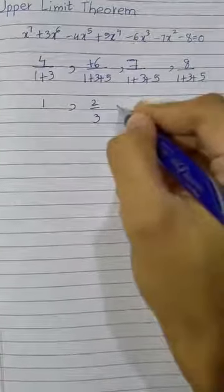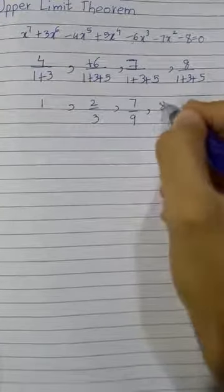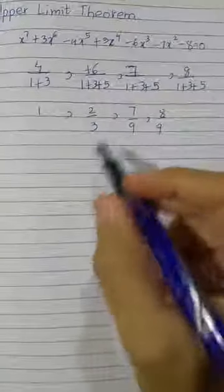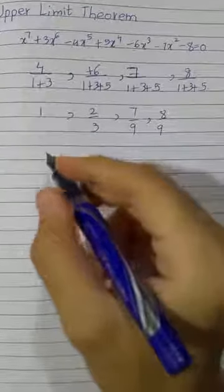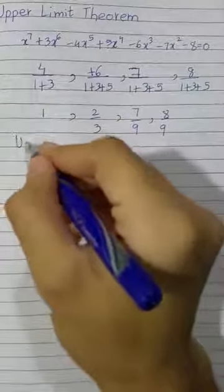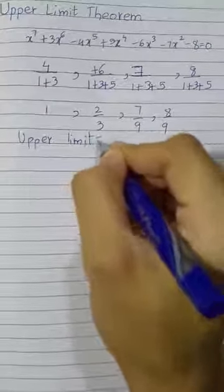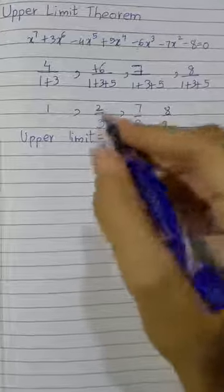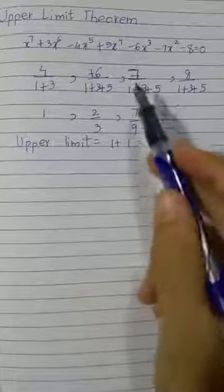So this comes out to be 1, 2 by 3, 7 by 9, 8 by 9. From this select the highest number. So from this the highest one is 1. So the upper limit is 1 plus the highest number, that is 1.